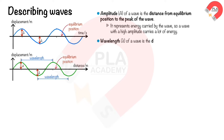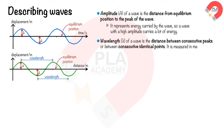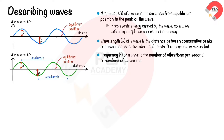Wavelength, λ, of a wave is the distance between consecutive peaks, or between consecutive identical points. It is measured in meters. Frequency, f, of a wave is the number of vibrations per second, or the number of waves that travel past a point per second. It is measured in hertz, Hz.